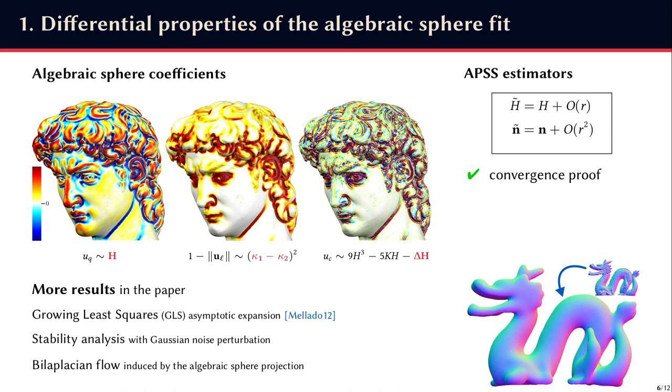We have also more results not shown here, like the asymptotic expressions of the GLS, which are basically derivatives of uc, ul, and uq with respect to the neighborhood size, and which are linked to other differential properties at other orders. We obtain stability guarantees of tilde h and tilde n when the surface is perturbed by Gaussian noise. And finally, we also prove that the geometric flow induced by the projection of a point onto the fitted sphere is related to a bilaplacian flow, as shown on the sampled dragon model.